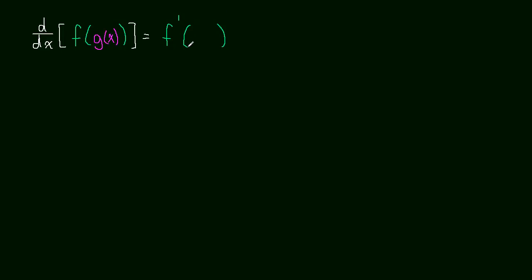In other words, the derivative of the outside function, and then you leave the inside function inside unchanged, and then you multiply by the derivative of the inside function, so it would be g prime of x. So if you like function notation better than looking at dy/dx equals dy/du times du/dx, these are two different ways of saying the exact same thing.